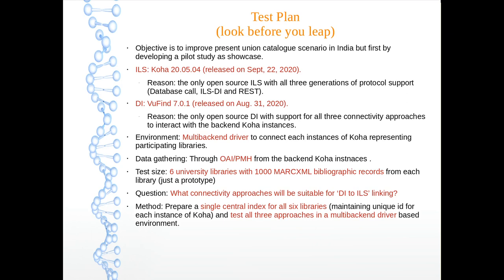Let us go to our test plan. We are going to develop a union catalog based on Koha and VuFind integration. ILS: Koha 20.05.04. Discovery interface: VuFind 7.0.1, the latest stable release. Environment: multi-backend driver. Data gathering protocol: OAI-PMH — all back-end ILS are OAI-PMH compatible and data is gathered through harvesting. Total 6 university libraries, 1,000 records in MARC XML format from each library. The question is: what connectivity approaches will be suitable for DI-to-ILS linking? Methodology: prepare a single central index for all 6 libraries and test all 3 connectivity approaches in a multi-backend driver environment.